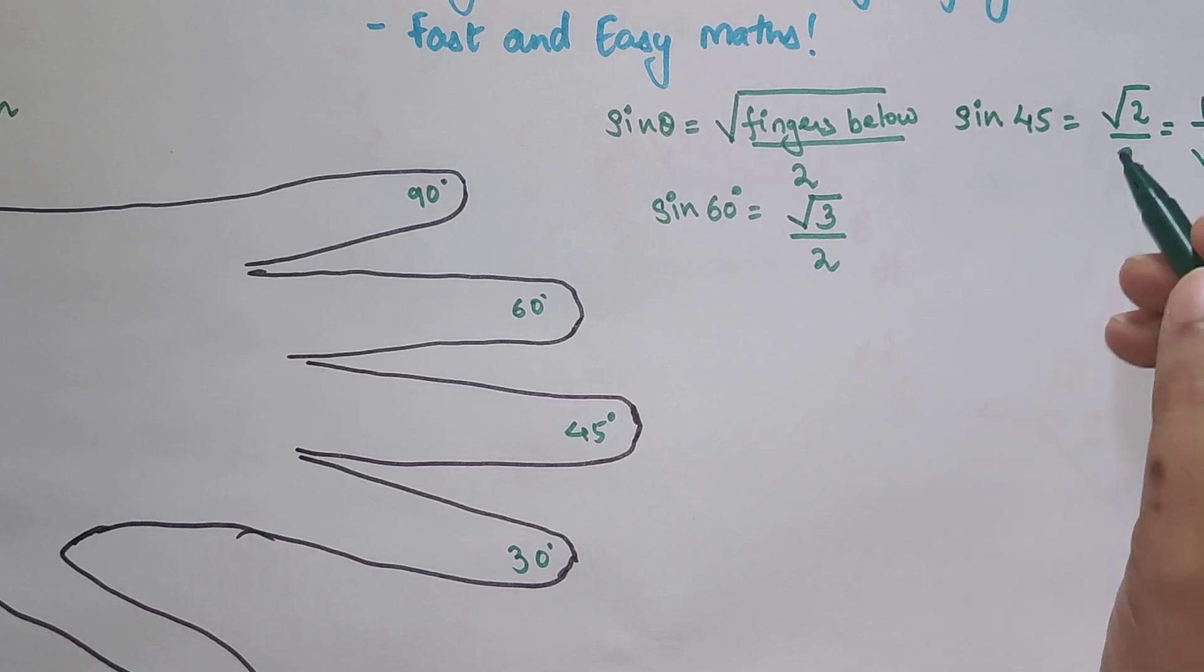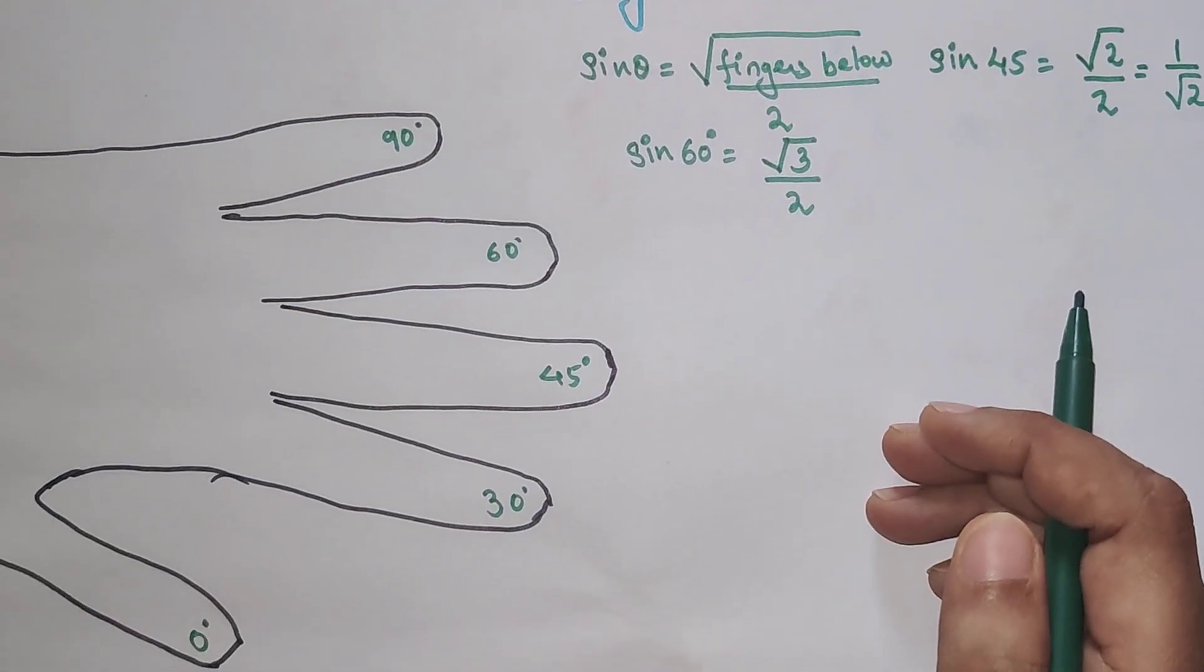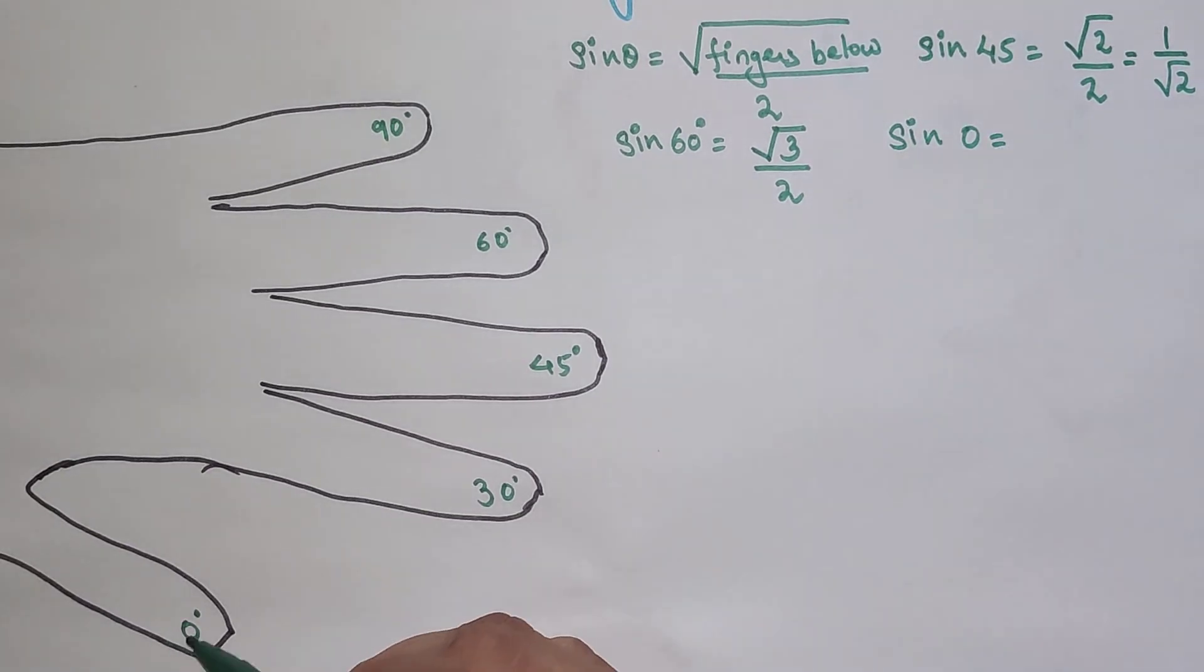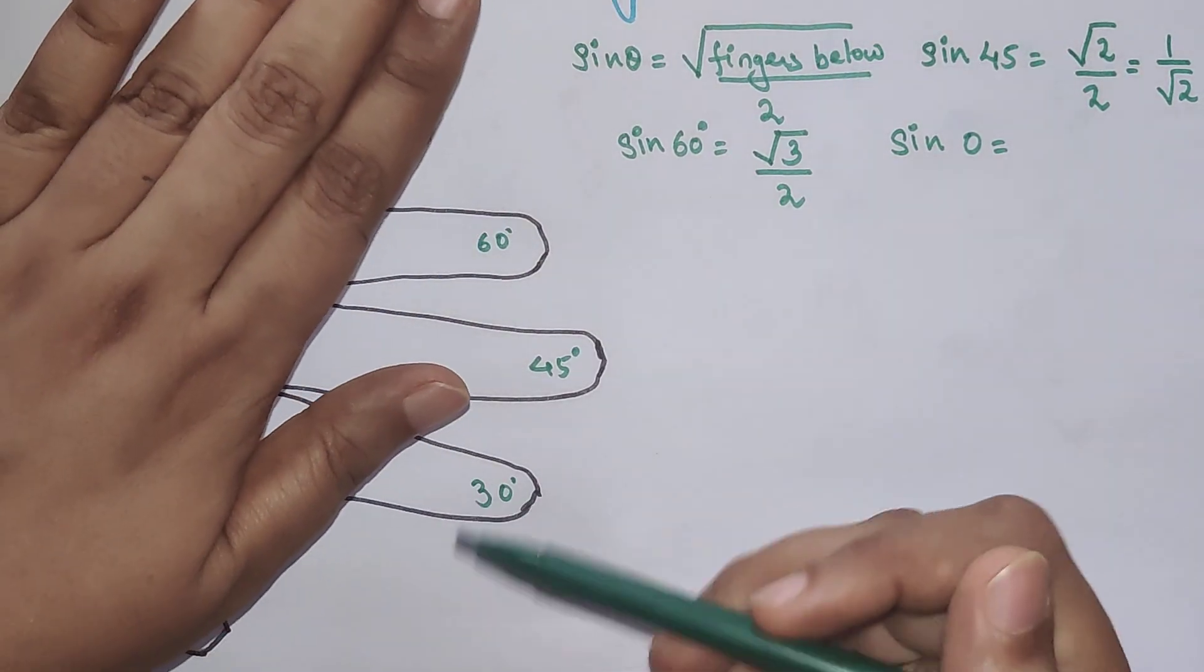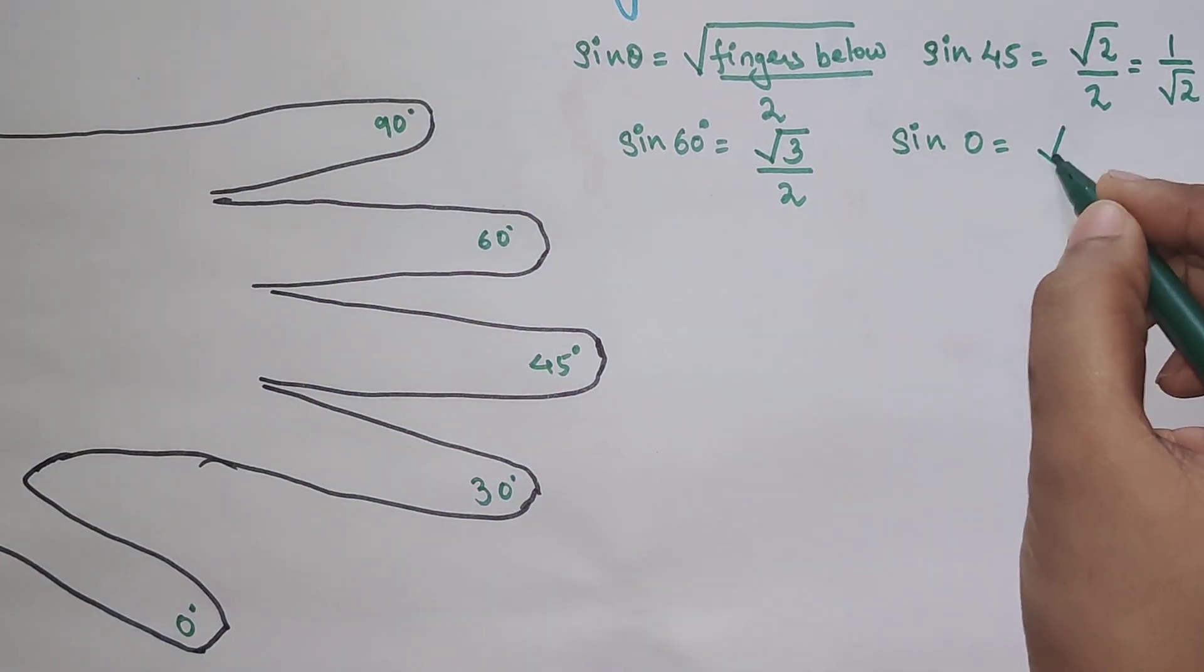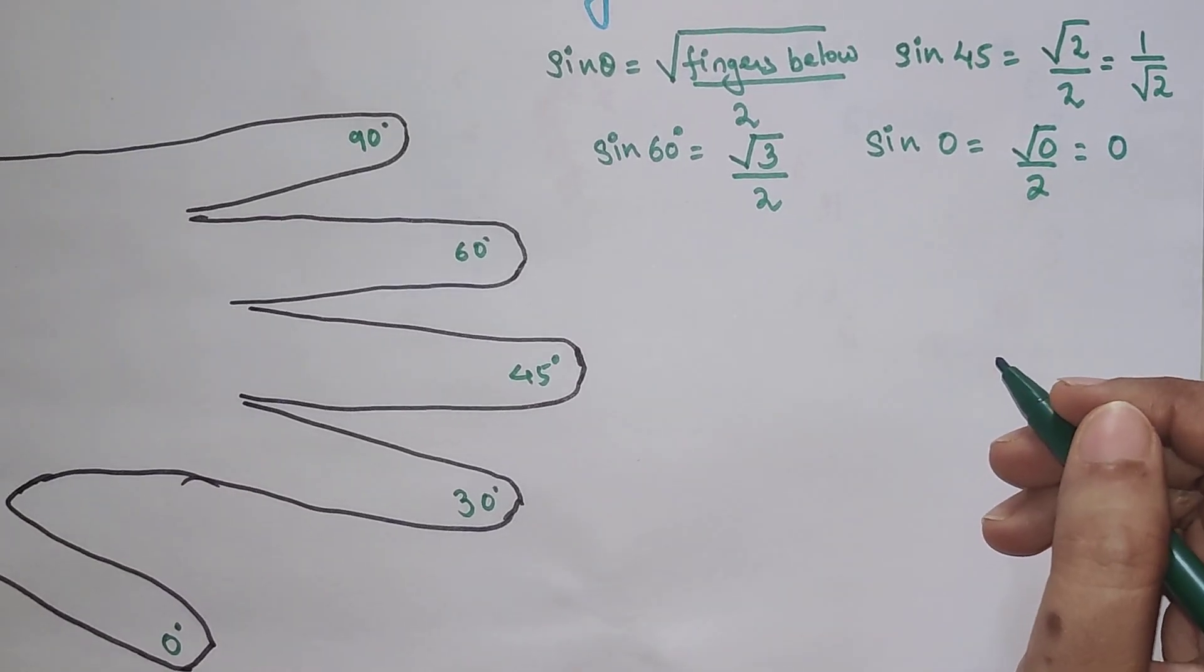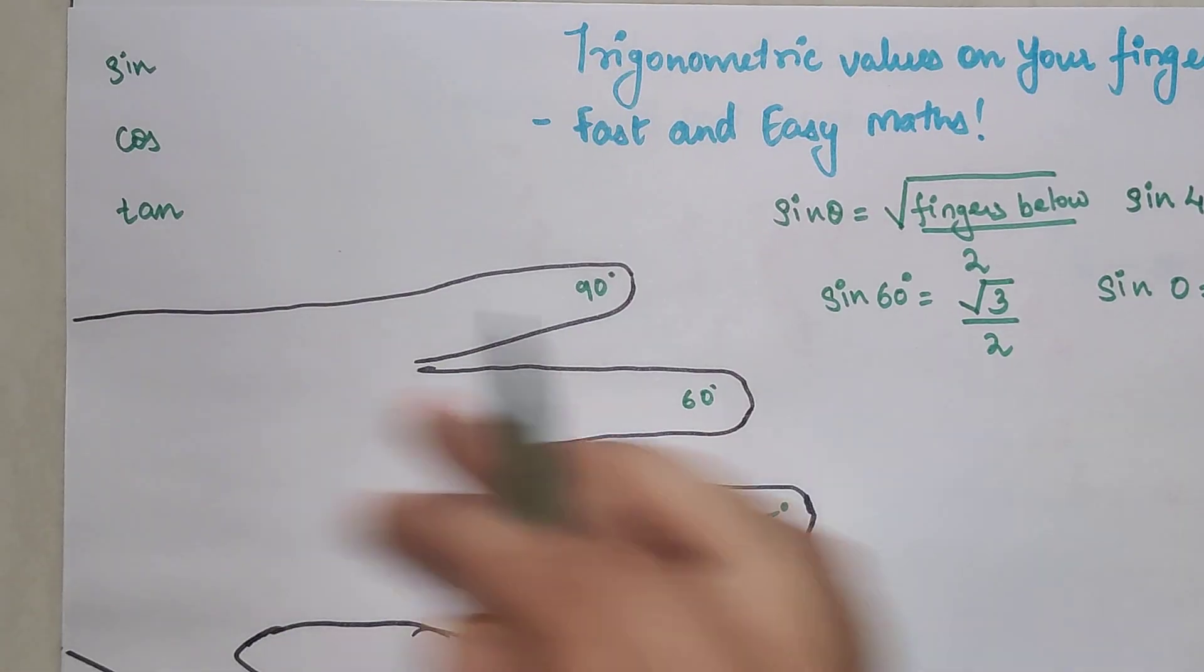Now using this if we want to find sin of 0, how many fingers are below 0? There are nothing because 0 is my thumb and there are no fingers below thumb. Everything is above the thumb. So root of 0 upon 2. Root of 0 is 0 and 0 upon anything will also get you 0. So that is your answer for sin values.